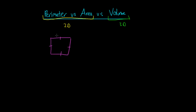So this square here — imagine that the sides of the square are two metres in length. It's a square, so all the sides have to be the same length: two metres, two metres, two metres, and two metres. The perimeter is just the length of the outside of the shape — the distance around the outside, around what we call the perimeter.